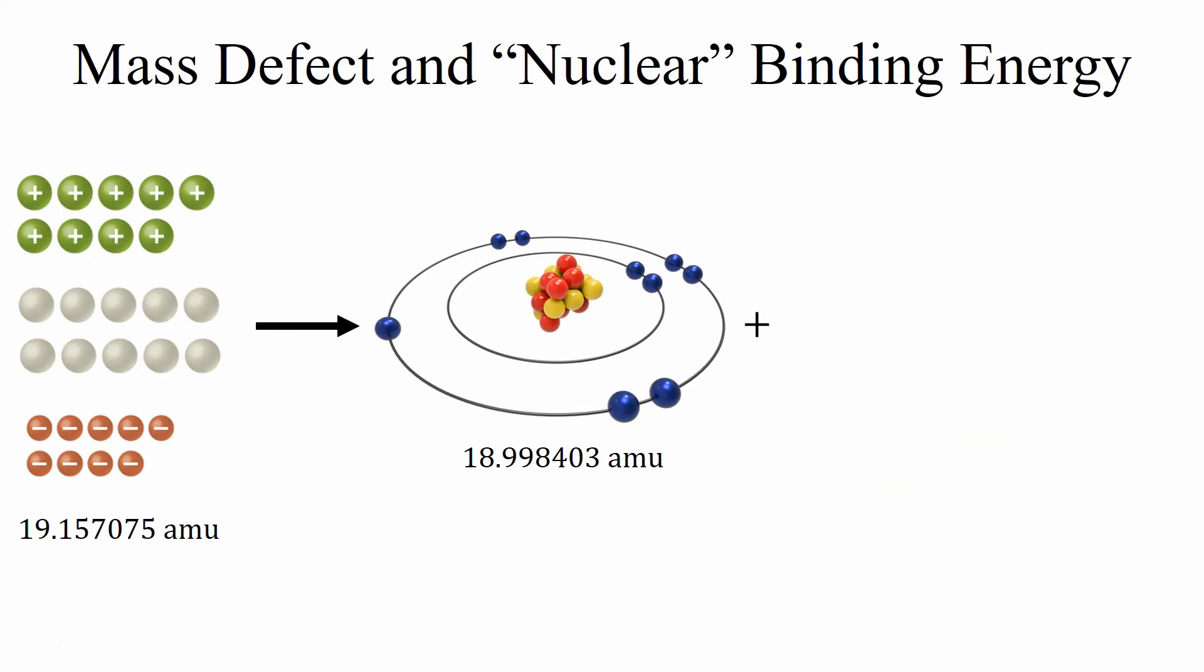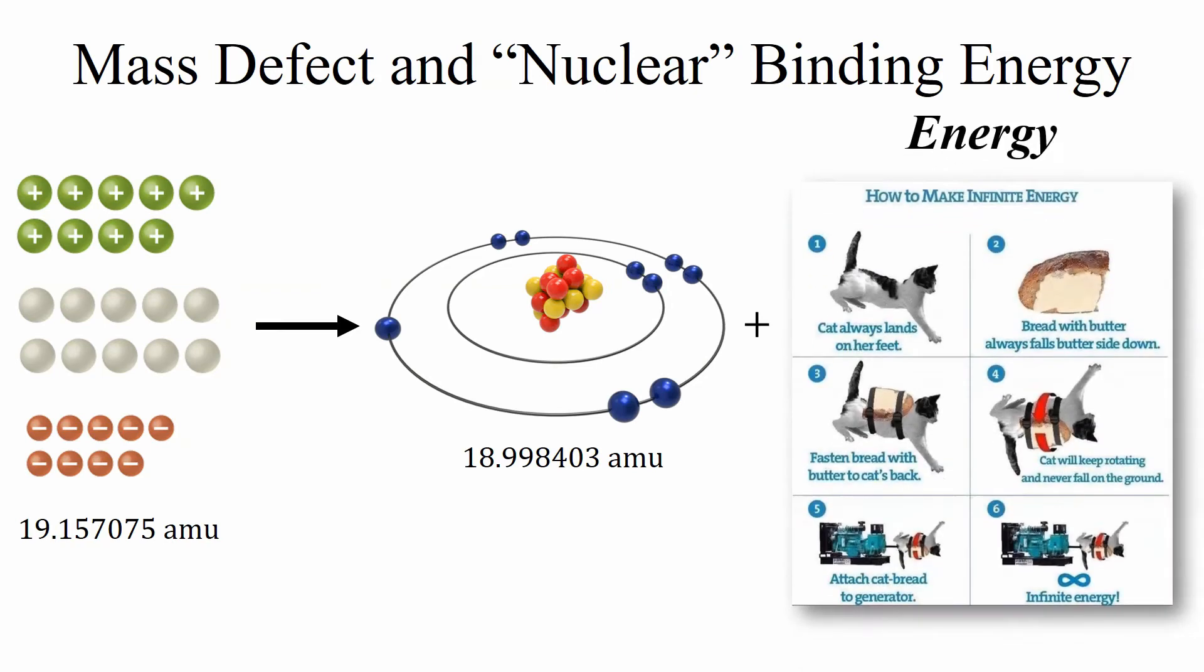So where did that mass go? Now you may notice that that value was negative. The mass defect in this case is negative because the mass that we ended with if we were trying to construct this fluorine-19 atom was less than the mass we started with with the individual subatomic particles. That difference leads to the nuclear binding energy.